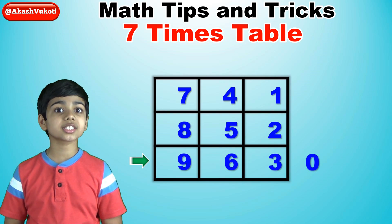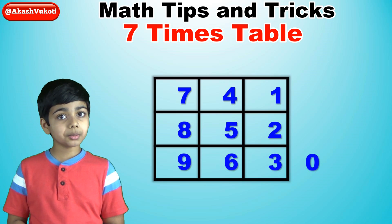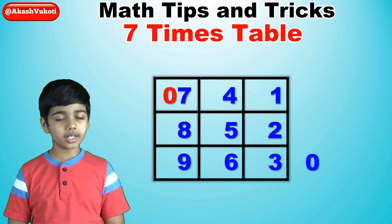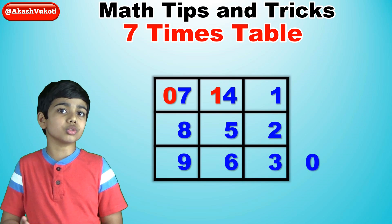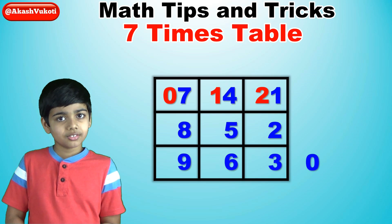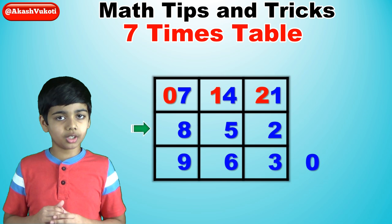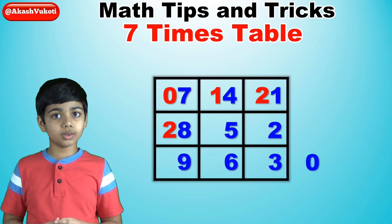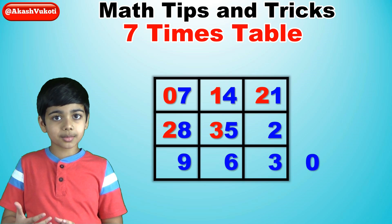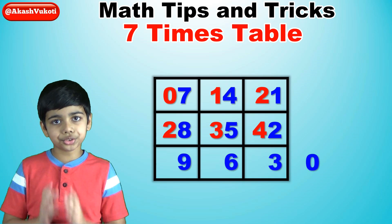For the tens digits in the top row, we will write zero in the first box, one in the second box, and two in the third box. For the tens digits in the middle row, we will write two in the first box, three in the second box, and four in the third box.